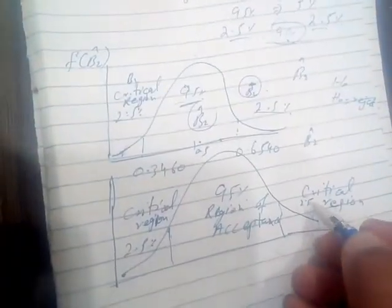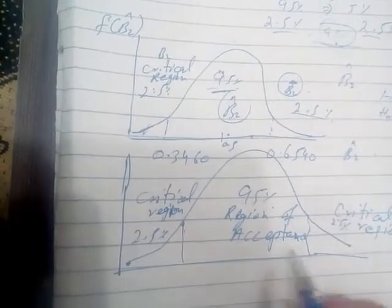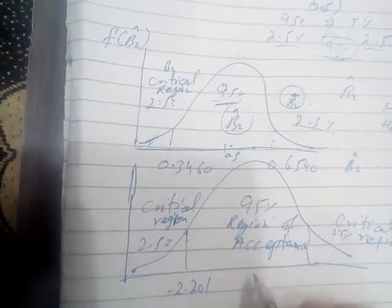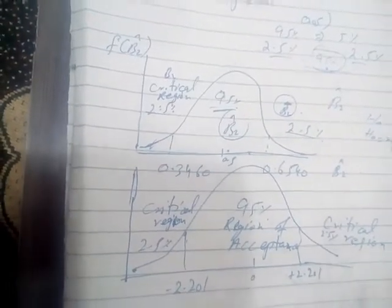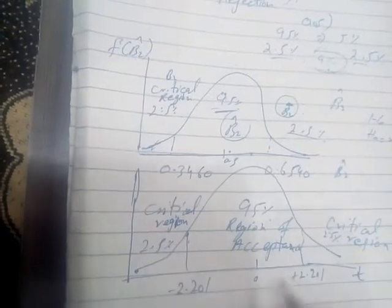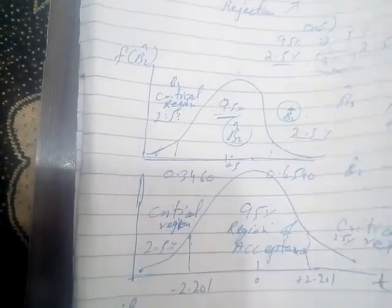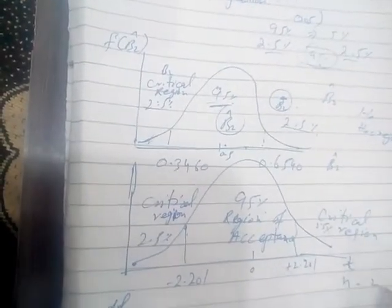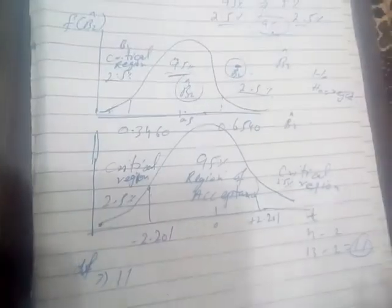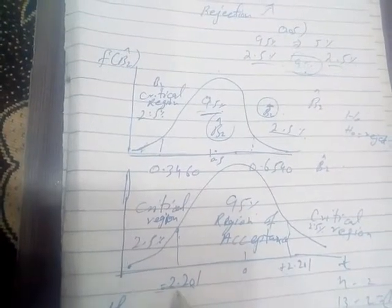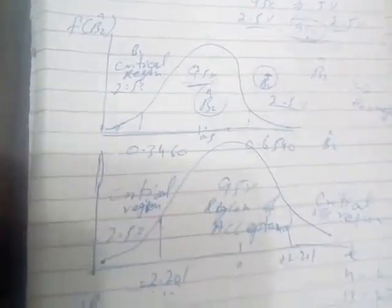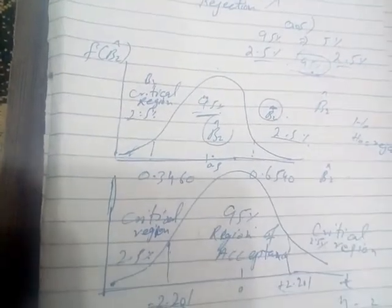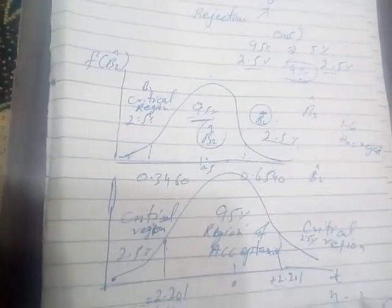Critical region दो sides पर है — 2.5% यहाँ और 2.5% यहाँ। वो interval किसी के दर्मियान था — 2.201 — degree of freedom के through करते हैं। Previous question में जब degree of freedom 11 आ रहा था — n minus 2 — where n = 13, तो 11 degree of freedom। ये हमने previously discuss किया था। −2.201 और +2.201 — अगर value इस area में lies करती है then accept the null hypothesis and reject the alternative.